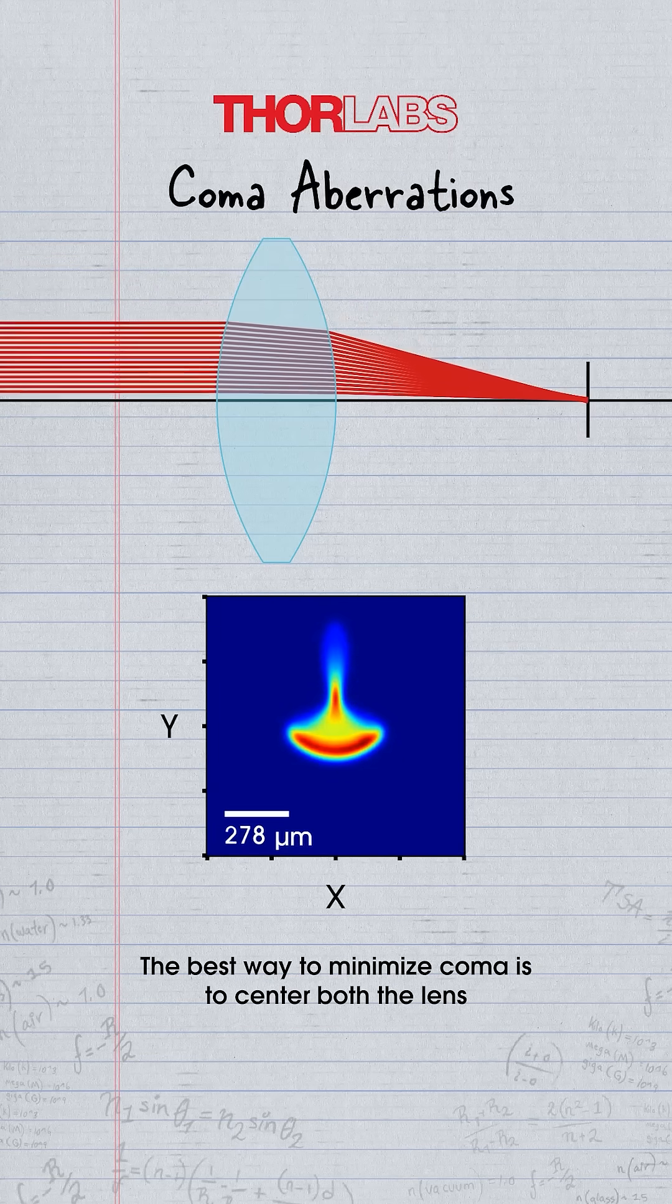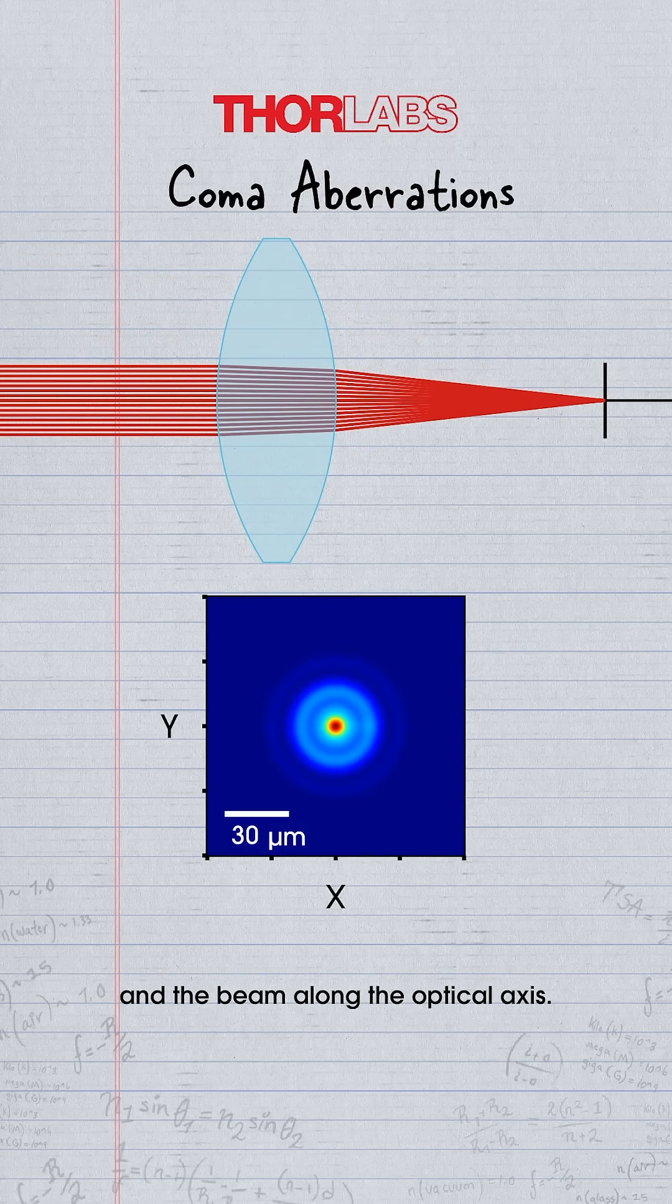The best way to minimize coma is to center both the lens and the beam along the optical axis.